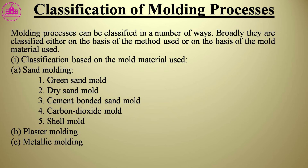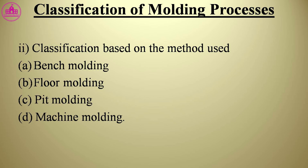Molding processes can be classified in a number of ways. Broadly they are classified either on the basis of the method used or on the basis of the mold material used. Classification based on mold material: sand molding — (1) green sand mold, (2) dry sand mold, (3) cement bonded sand mold, (4) carbon dioxide mold, (5) shell mold; plaster molding; and metallic molding. Classification based on method used: bench molding, floor molding, pit molding, and machine molding.